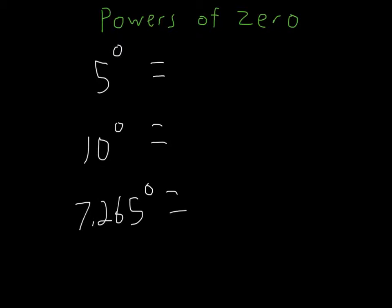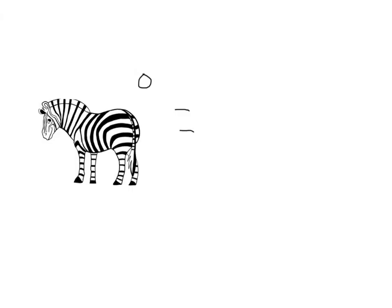5 to the zeroth power is 1. 10 to the zeroth power is 1. 7.265 to the zeroth power is 1. Anything to the zeroth power is 1 — anything you're asking. Even a zebra to the zeroth power is 1.